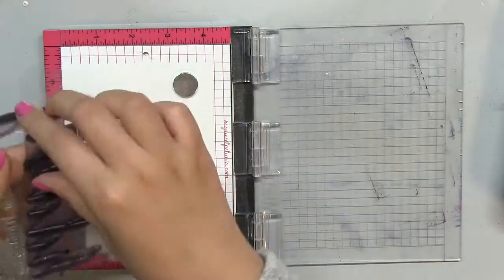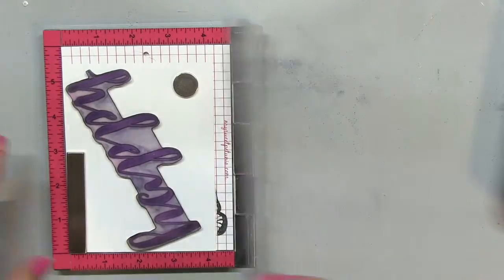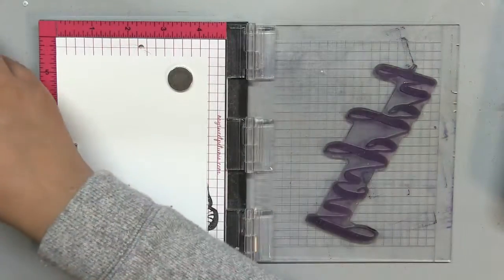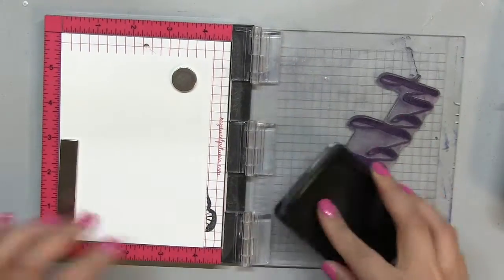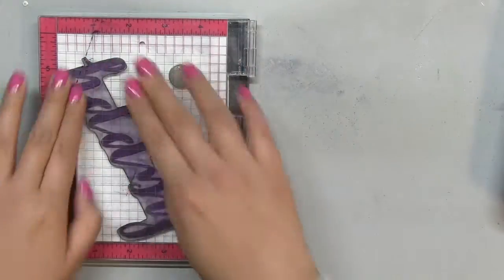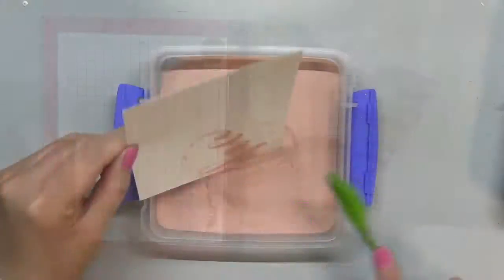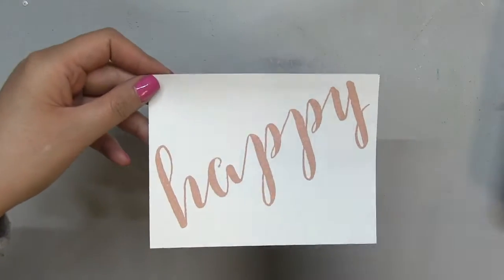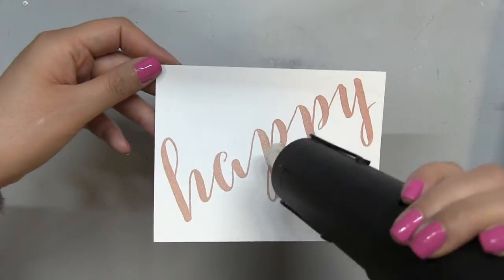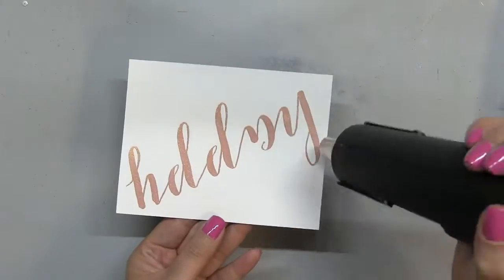And then I'm just going to go ahead and rose gold heat emboss our Brushed Happy Sentiment, and I'm just heat embossing this on some regular white cardstock. I'm using my Mini MISTI to help me stamp this large sentiment stamp. I inked it up with some Brutus Monroe Embossing Ink, and then I just spooned on some of our rose gold embossing powder, and then I'm just going to hit the entire panel with my heat tool.